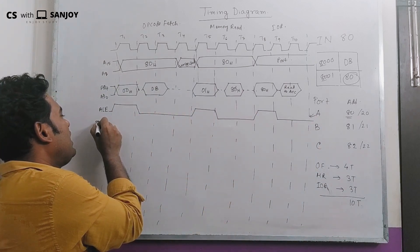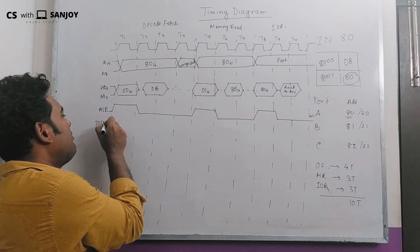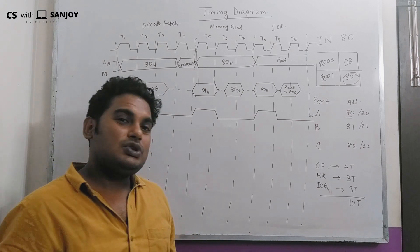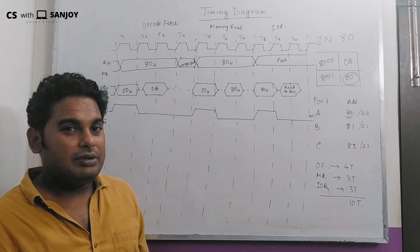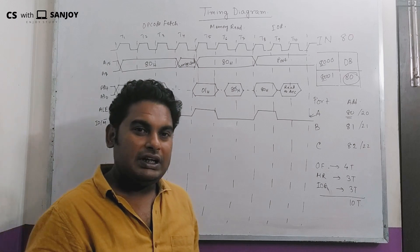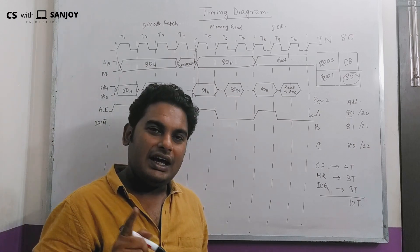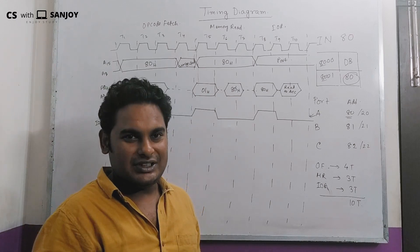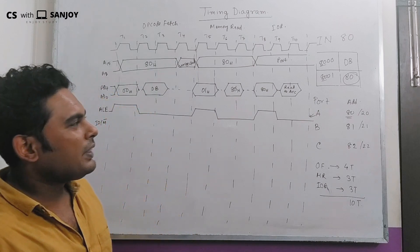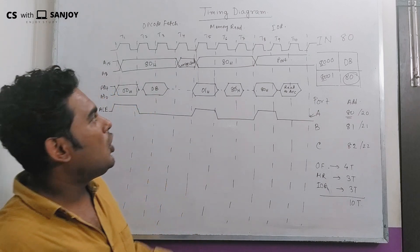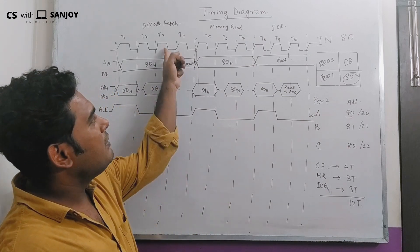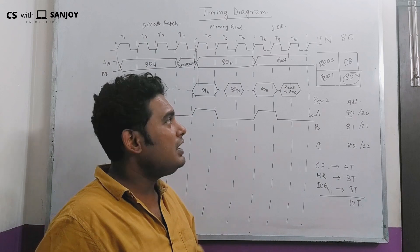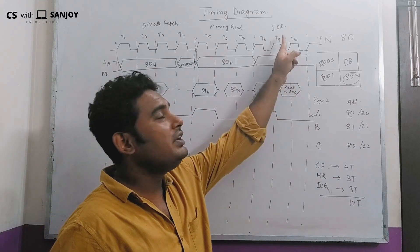Next comes IO/M bar — this is very important. During the opcode fetch and memory read cycles, the IO/M bar signal is low for memory operations. For the IO read cycle, the IO/M bar is high, indicating an IO operation rather than a memory operation.